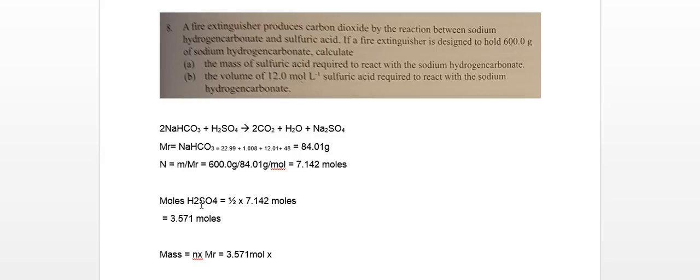Which in our case we know is equal to 3.571 moles of sulfuric acid times the molar mass of sulfuric acid: 2 lots of 1.08, 1 lot of 32.07 and 1 lot of 64. Trust me, it equals 98.09 grams per mole for sulfuric acid. And that equals 350.3 grams of H2SO4.